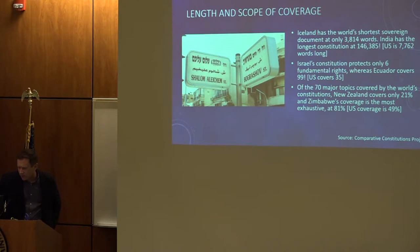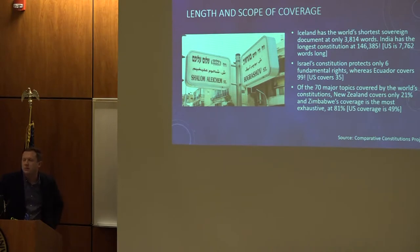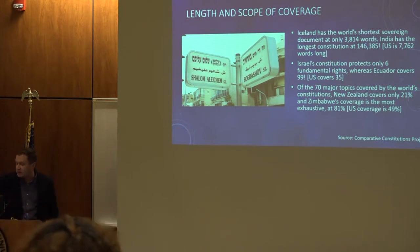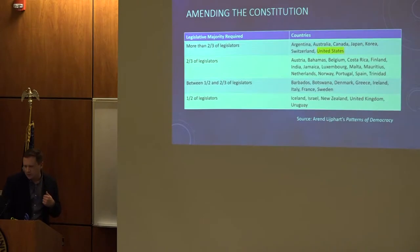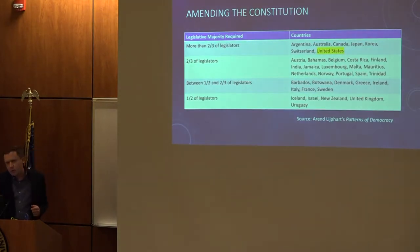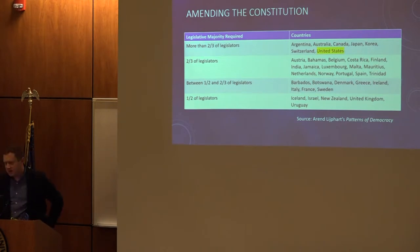In terms of topic coverage, the US covers about half of the universe of constitutional possibilities — a lot of that having to do with our federal system, with additional rights covered at the local level. Other countries do either much more or less than that. Zimbabwe is the most exhaustively covered constitution at 81% of those topics, and New Zealand's the least at 21%. Length and scope differ, and a lot of that has to do with the amending process.